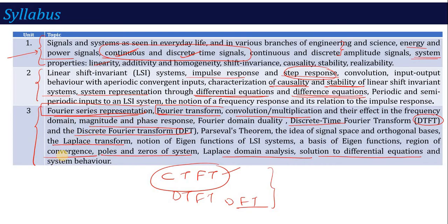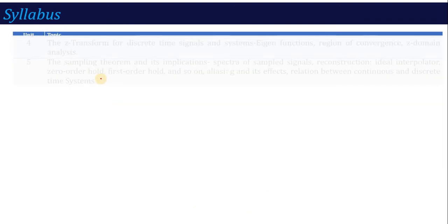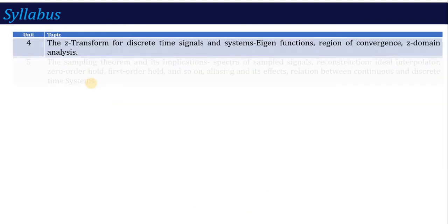Unit 4 is again whole transform analysis — discrete time signal analysis. The domain and method used here is called the Z-transform. Here you will study the complete Z-transform: how to calculate Z-transforms of different signals, the different properties of Z-transform, how to calculate the ROC, and Z-domain analysis for discrete time systems described by difference equations.